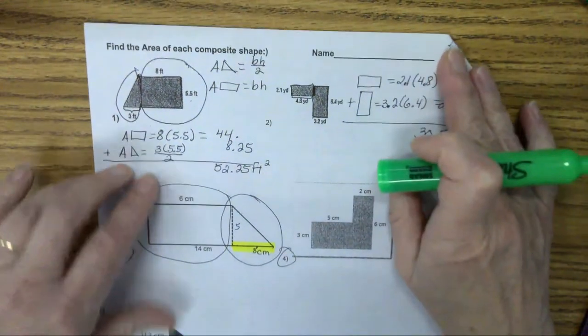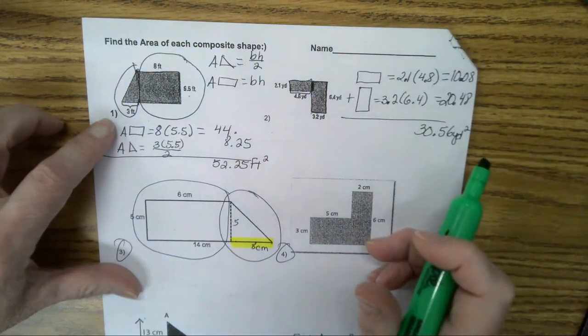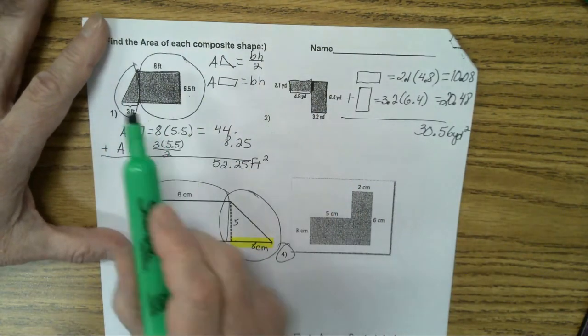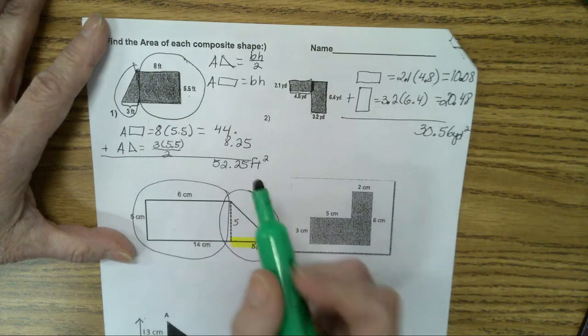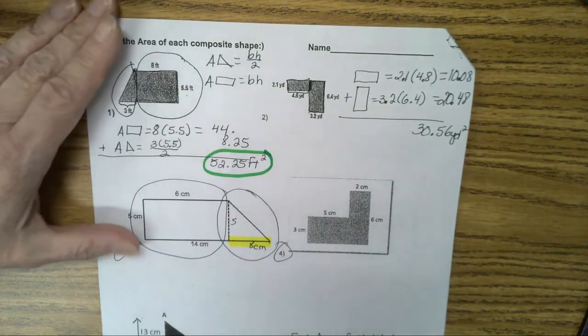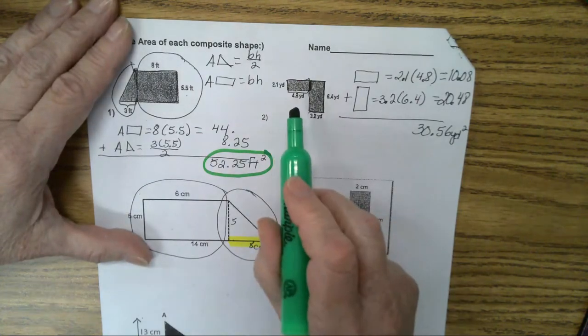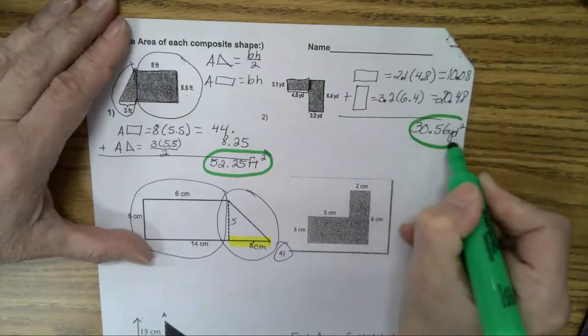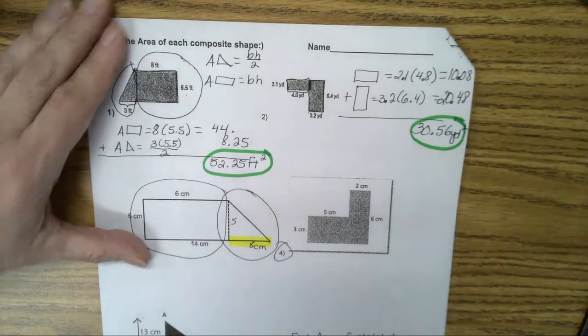The next page of the packet, we did one and two yesterday. We break it into two pieces. We have the triangle plus the rectangle. And your final answer is 52 and 2,500 feet squared. Here we have two rectangles. We added it together and we have 30 and 5,600 yards squared.